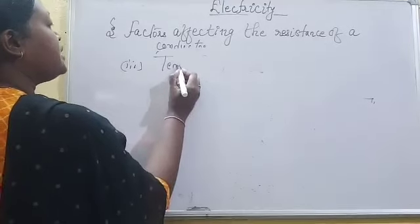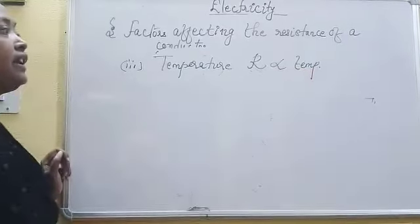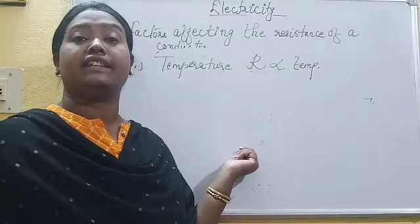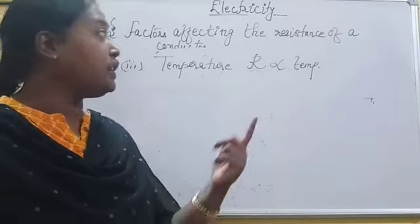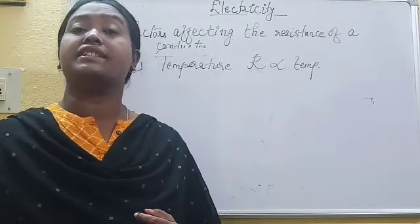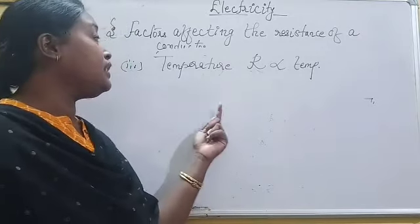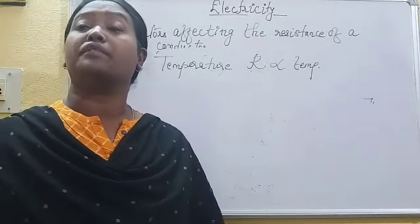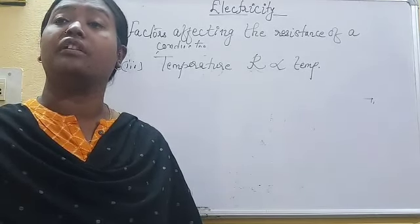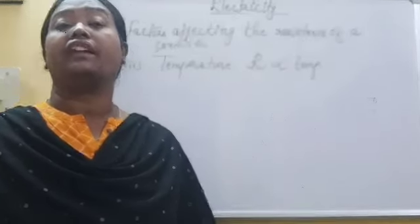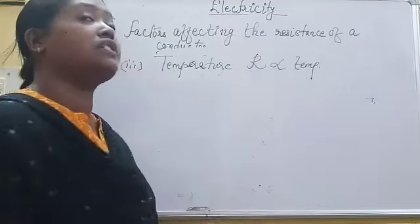The third factor is the temperature of the conductor. Resistance is directly proportional to the temperature of the wire. That means if the temperature of the wire increases, its resistance increases. The question is: why does the resistance of the conductor increase with increase in temperature? We know that the resistance of the conductor is due to collisions among the electrons, with the walls of the wire, and also with the atoms and ions. As temperature increases, the number of collisions between electrons and other electrons, atoms, and ions also increases. As the number of collisions increases, there will be obstruction in the flow of electrons — that means resistance increases. Therefore, resistance is directly proportional to temperature.